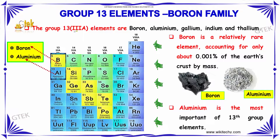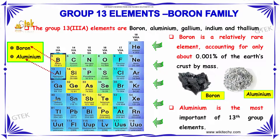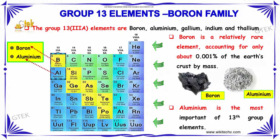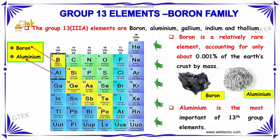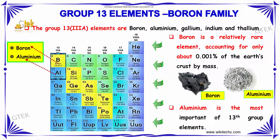Group 13 is nothing but the boron family. It consists of boron, aluminium, gallium, indium and thallium. Boron is relatively a rare element, accounting for only about 0.001% of the earth's crust by mass.